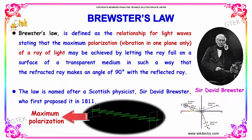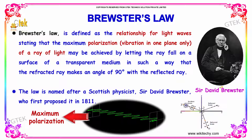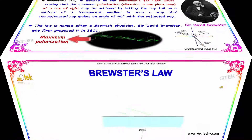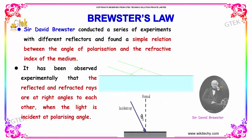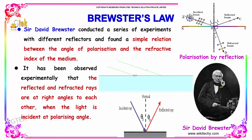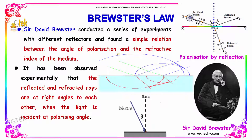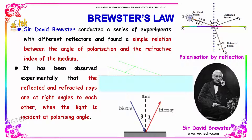The law is named after Scottish physicist Sir David Brewster, who first proposed it in 1811. Sir David Brewster conducted a series of experiments with different reflectors and found a simple relationship between the angle of polarization and the refractive index of the medium.